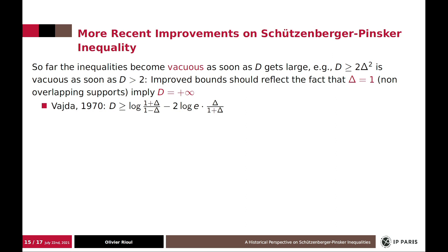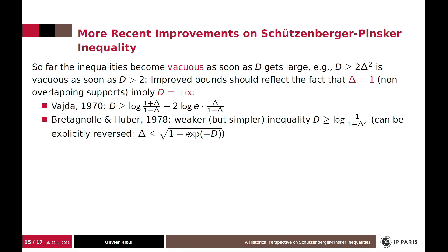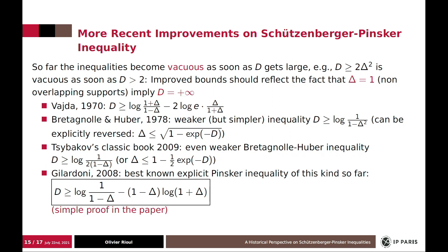And so the first inequality of this type that was derived by Vajda actually has this property, because of the one minus delta in the numerator. Then Bretagnolle and Huber in 1978 had a simpler but weaker inequality, which is well known in statistics, and which appears in Tsybakov's classic book, however, even a weaker version. And finally, the best known inequality of this type was derived recently by Gilardoni. And if you want to have a simple proof of this, you can look at my paper.